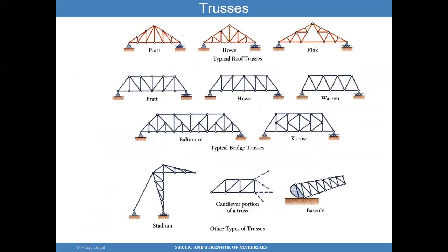Here are various types of trusses that exist: the Pratt, the Fink, the Warren, the K-Truss, the Baltimore, the Stadium, and other types. They have typical names for roof, bridge, and other types of truss applications.